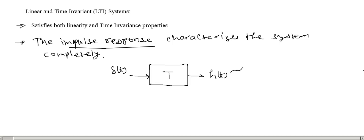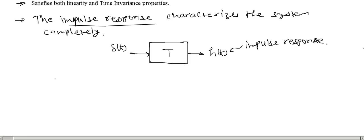The impulse response is denoted by H of t. Now, if you know H of t, then you can calculate the output due to any arbitrary input, say X of t. If you apply X of t, then we can get the output for this arbitrary input by a convolution of this input with the impulse response H of t.